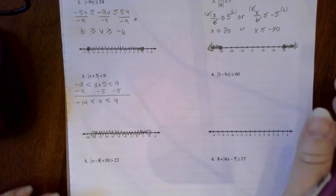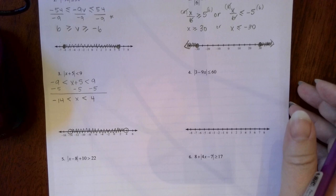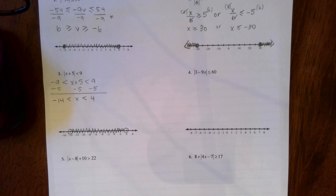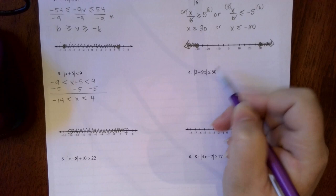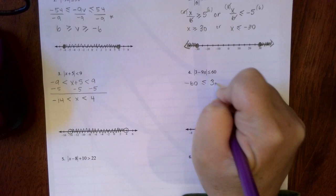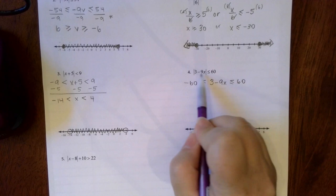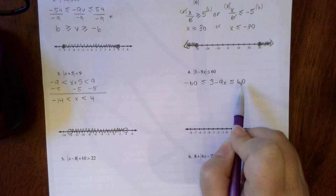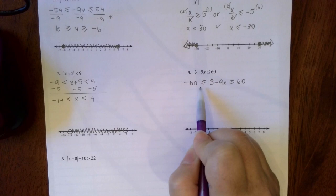Let's look at number 4 — hit pause, give it a try. You have a less than again, so less than means and, land. You've got negative 60 less than or equal to 3 minus 9x less than or equal to positive 60. Notice that the stuff inside the absolute value didn't change at all — it stayed the same, the 60 stayed the same. All we did was put a negative 60 in the front.